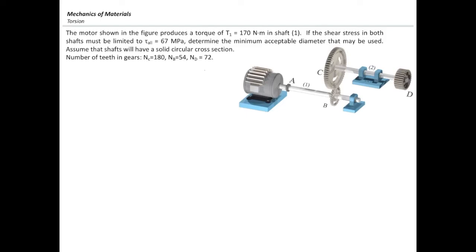The motor shown in the figure produces a torque of 117 Nm in shaft 1, the bottom shaft. If the shear stress in both shafts must be limited to 67 MPa, determine the minimum acceptable diameter that might be used in these two shafts. We want to use the same diameter for both shafts.